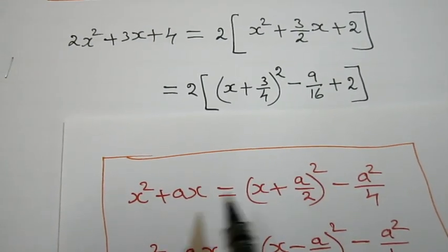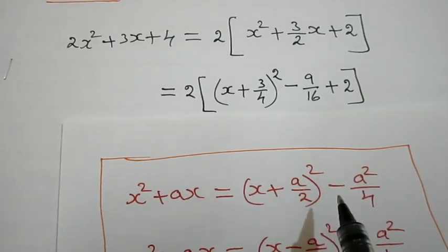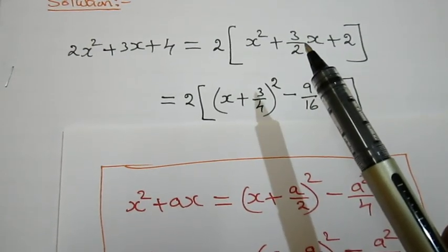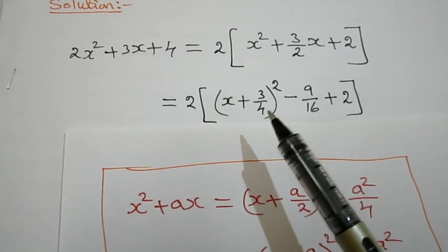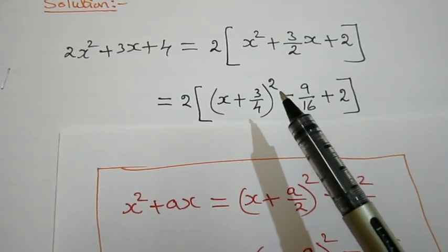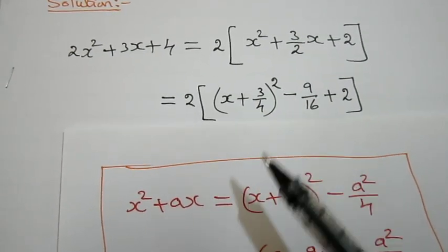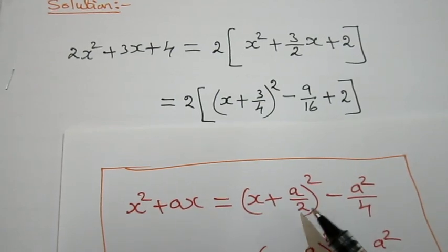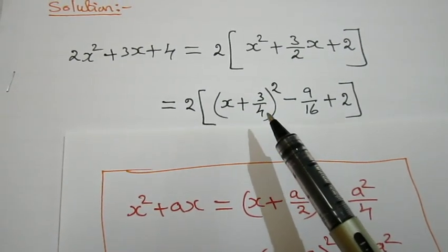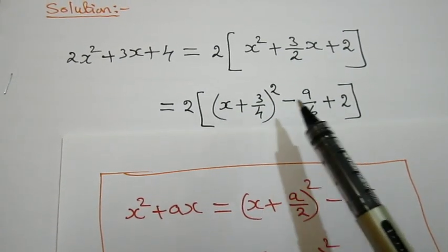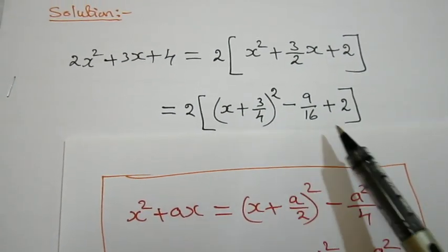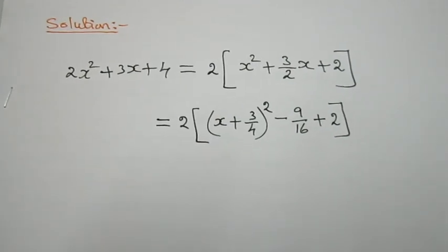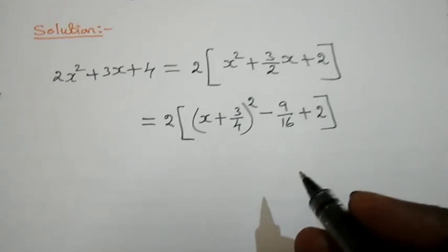The perfect square formula is x squared plus ax equals x plus a by 2, the whole square, minus a squared by 4. Here a is 3 by 2, so a by 2 is 3 by 4. The square of the inner term is a squared by 4, which is 9 by 16 since 3 squared is 9 and 4 squared is 16.